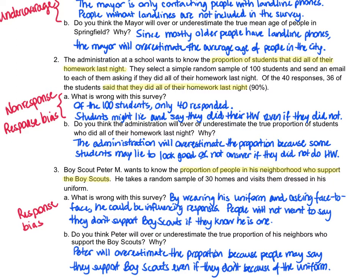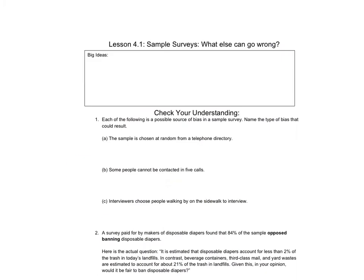Let's take a look at our box of important information. One of the new vocab terms we just learned is undercoverage. This is when some members of the population either cannot or are very unlikely to be chosen — for example, using landlines to contact people. The same thing could apply to mail-in surveys or cell phone surveys.